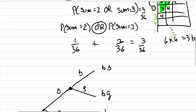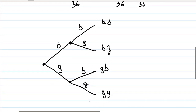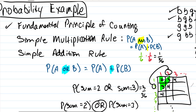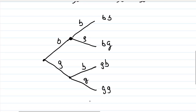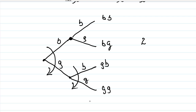The total number of possible outcomes can be determined by the fundamental principle of counting: if one event can happen one of two ways, and a second event can also happen one of two ways, the total number of ways those two events can occur together is 2 × 2 = 4 different outcomes.